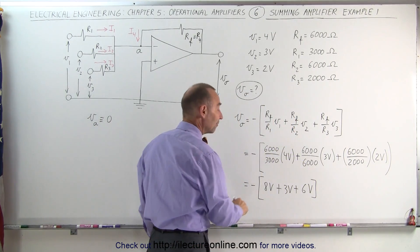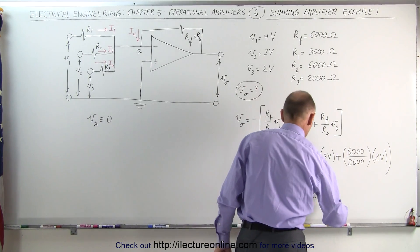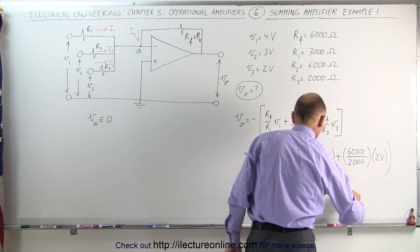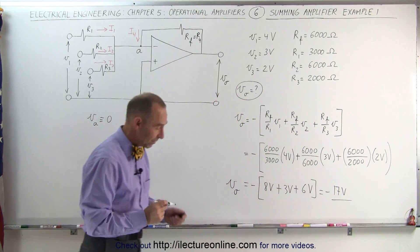And of course with the negative sign in front, because it's an inverting mode, that would equal minus 17 volts for the output voltage. So Vout, the output voltage is minus 17 volts.